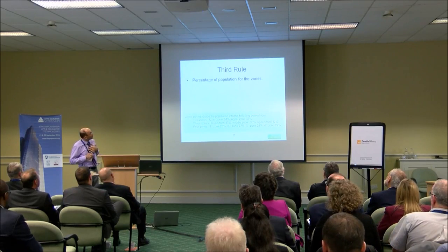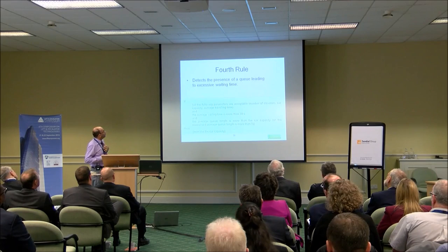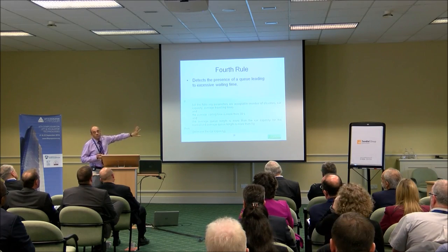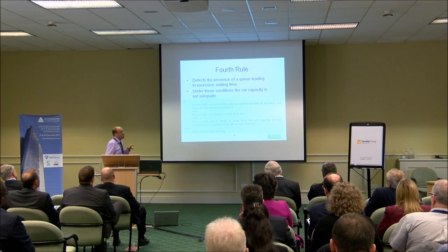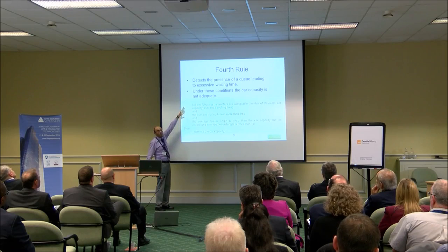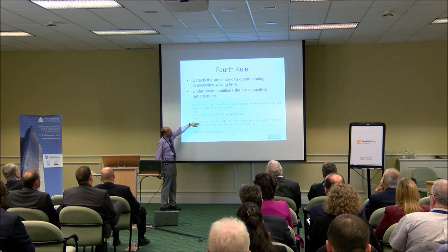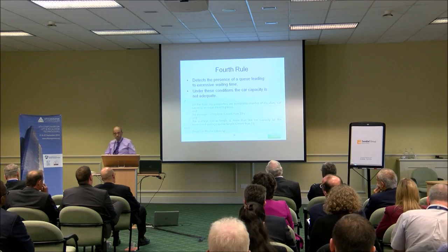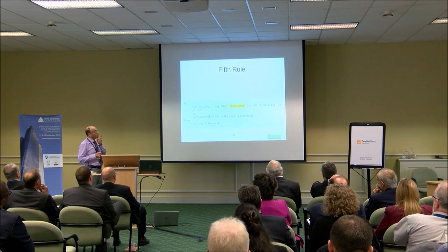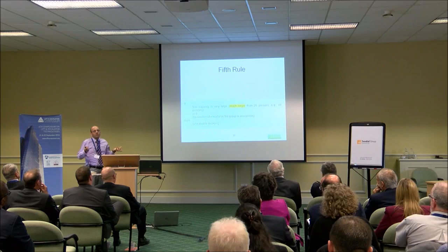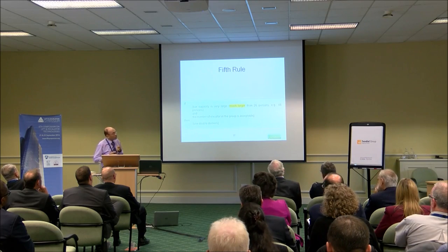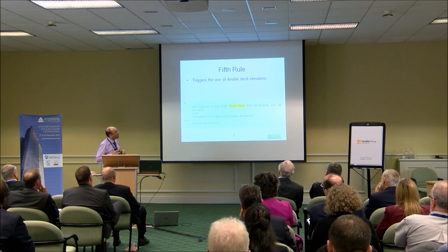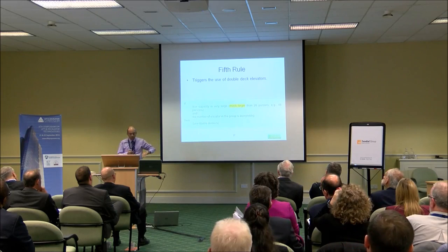The third rule is splitting the zones to equalize the number of elevators. The fourth rule addresses the case where you might have too small a car and queues are developing, but everything else is fine — one solution is to increase the car capacity. I tried to use a standard format: an antecedent as the condition, and if that condition is met, you carry out whatever is specified; otherwise you do something else. The fifth rule could be a trigger for double-deckers — if calculations show the car capacity is large but everything else is fine, that could trigger the use of double-deckers.